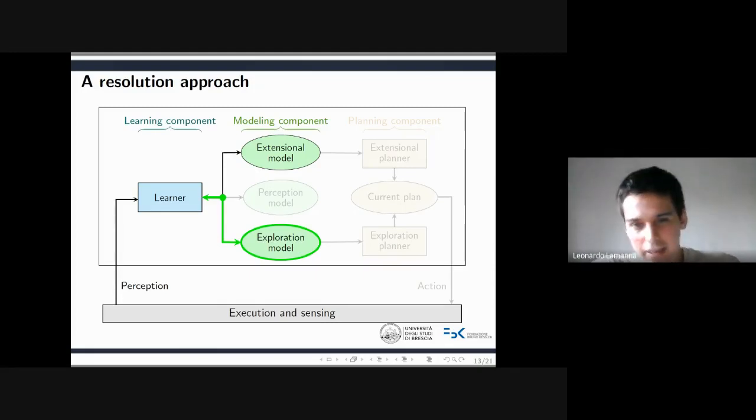The PDDL state represents the belief of the agent about the current status of the environment. Moreover, we don't require this exploration model to be fully correct. Indeed, the learner revises the exploration model whenever a failure occurs in the attempt of executing an action. The exploration model is revised by adding auxiliary predicates and action preconditions which constrain the grounding of an operator to generate only actions which are not previously failed.